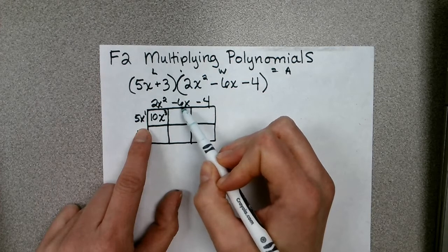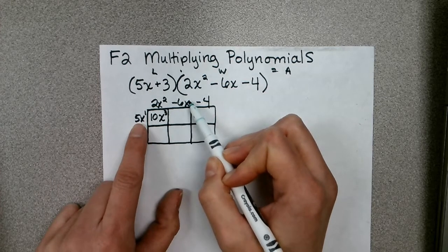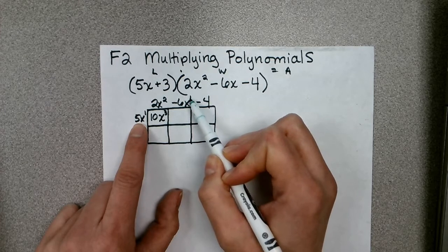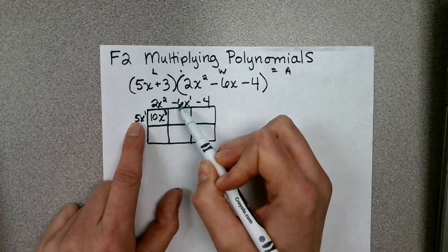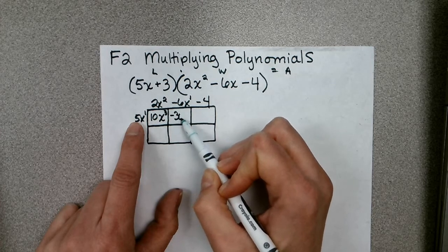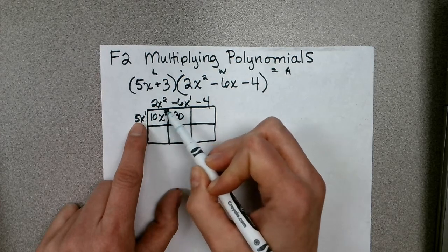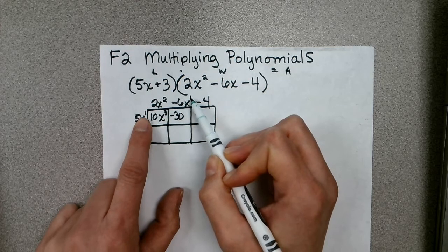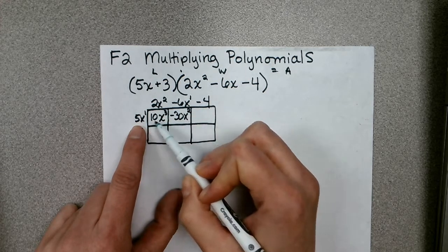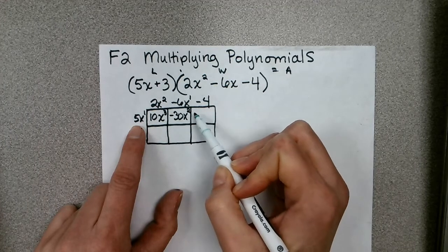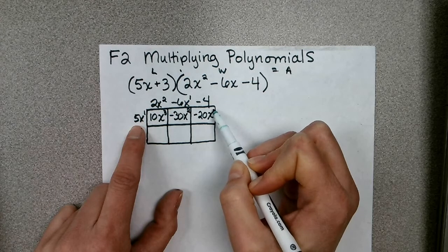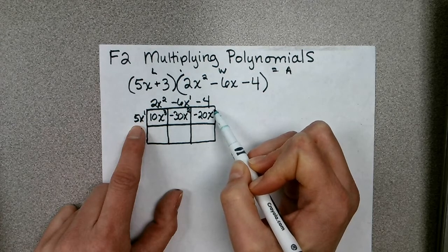When we go on to find the area of this next box, we're multiplying 5x to the power of 1 times negative 6x to the power of 1. Let's focus on the coefficients first: 5 times negative 6 is negative 30. X to the power of 1 times x to the power of 1, we add those powers, we get x squared. 5x times negative 4 is going to be negative 20x.